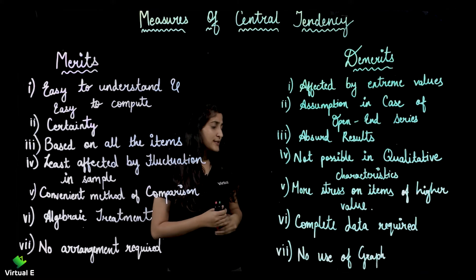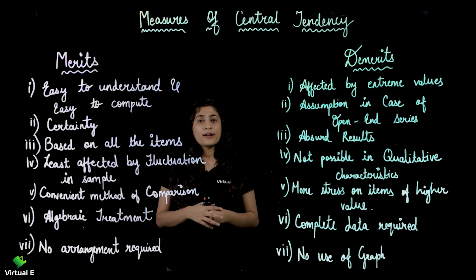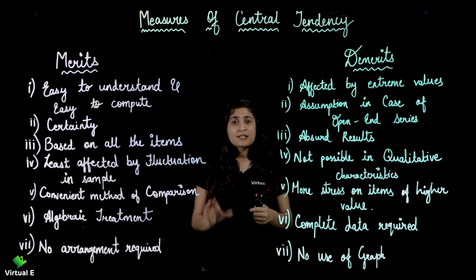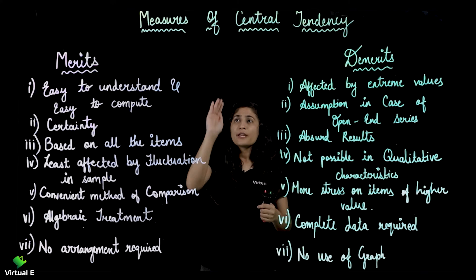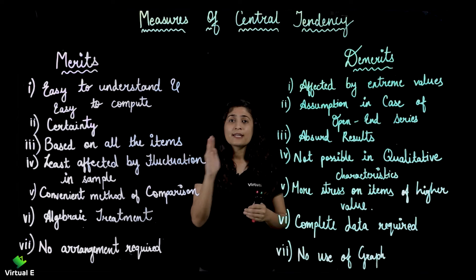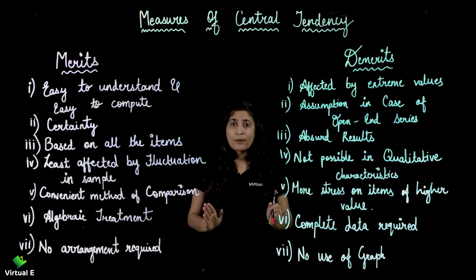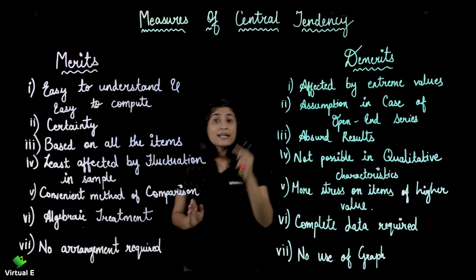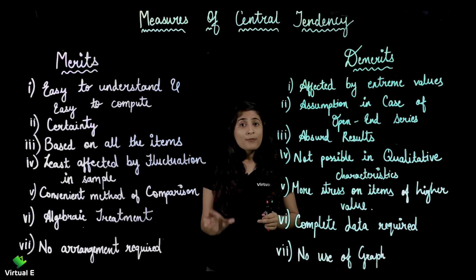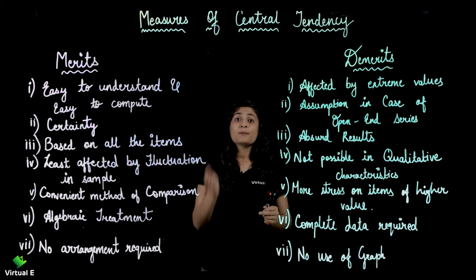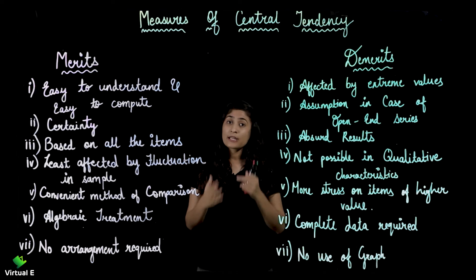The next demerit is complete data required. If you are given a data set with information of 1,000 people but it turns out to be only 999, mean cannot be calculated. Because we need N — the total number of observations — and if we write it wrong or if the data is incomplete, you cannot calculate the mean.